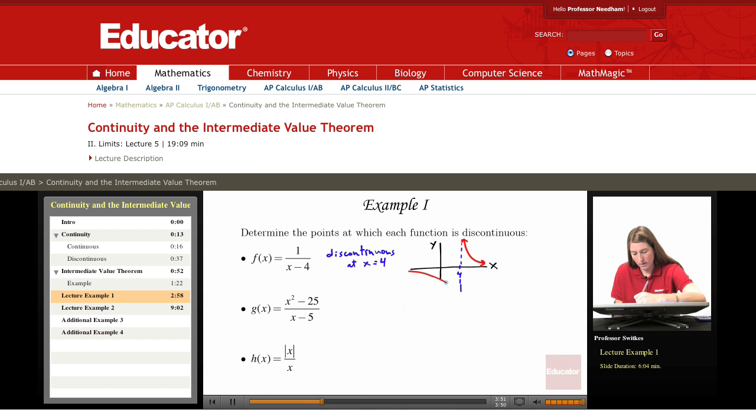Notice that the one-sided limit as x approaches 4 from the left would be negative infinity. The one-sided limit as x approaches 4 from the right would be positive infinity. The one-sided limits aren't even existing. They're infinite results, and they're not equal, and for all of these reasons, and the fact that f(4) itself doesn't even exist.